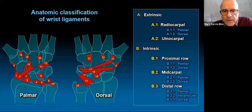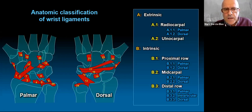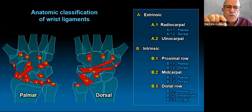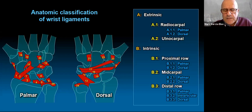Does that mean the rest are non-ligaments? Of course not. This is the anatomical classification of wrist ligaments. There are many anatomical variations not only in how they insert and originate, but also in how they relate to each other. There are many different classifications, but this one is quite interesting — it discusses extrinsic and intrinsic ligaments. Extrinsic ligaments connect forearm bones with carpal bones; intrinsic ligaments connect carpal bones to each other.